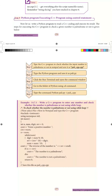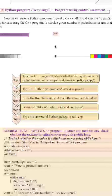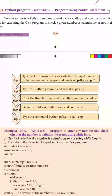Hello students, today we are going to see the topic 'Python Program Execution by Executing C++ Program Using Control Statements'. In this chapter we are seeing the whole thing with importing a C++ program into a Python program. We are going to create a C++ program that will have some control statements, and that C++ program will be executed by a Python program.